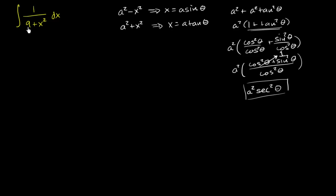So let's see if we have what's going on over here. We could rewrite this so 9 plus x squared, you could rewrite as 3 squared plus x squared. In this case, a would be equal to 3.